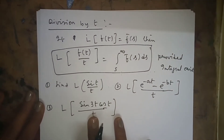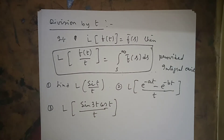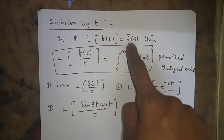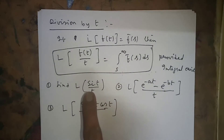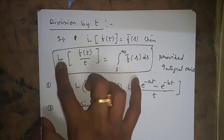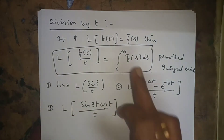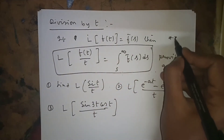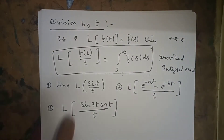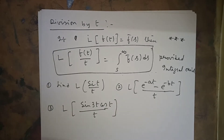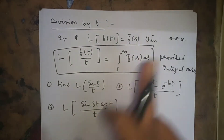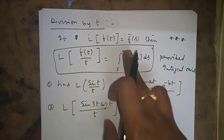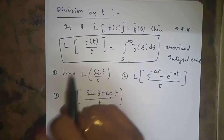The next formula is Division by t. If L{f(t)} = F̄(s), then L{f(t)/t} = ∫_s^∞ F̄(s) ds, provided the integral exists. You can easily identify: if a function has t^n multiplied, use multiplication by t^n; if the function is divided by t, apply the division by t formula.